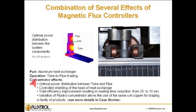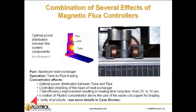Combination of several effects of magnetic flux controllers: in this example, the part is an aluminum heat exchanger and the operation is tube-to-pipe brazing. Concentrator effects include optimal power distribution between tube and pipe, controlled shielding of the head of the heat exchanger, and total efficiency improvement resulting in heating time reduction from 25 to 15 seconds. Variation of flux concentrator allows the use of the same coil copper for brazing a family of products.